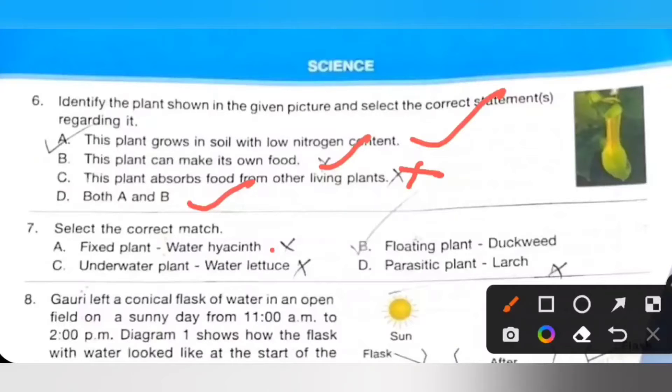Seventh one: Select the correct match. A: Fixer plant, water hyacinth, it is incorrect. B: Floating plant, duckweed, it is the correct statement. C: Underwater plant, water lettuce, it is incorrect. D: Parasite plant, larch, it is also incorrect. So option B is the correct match.